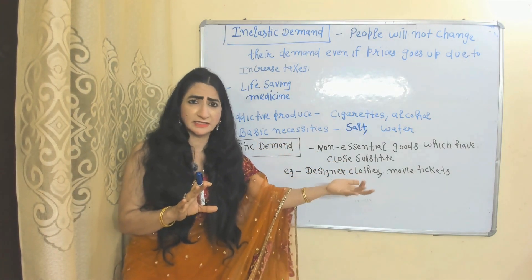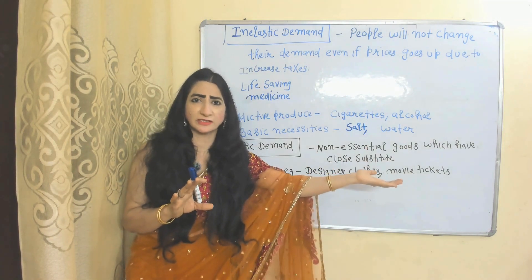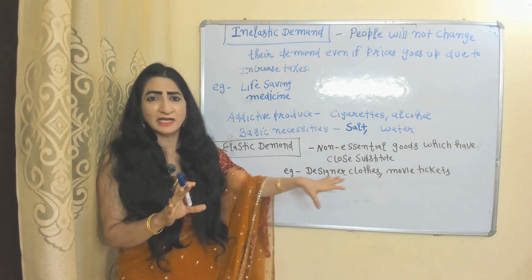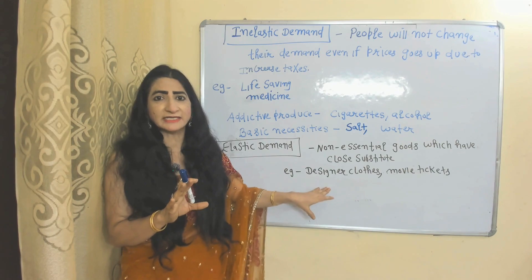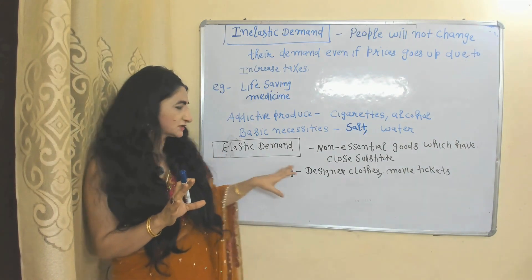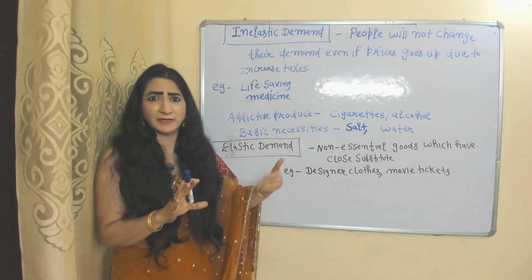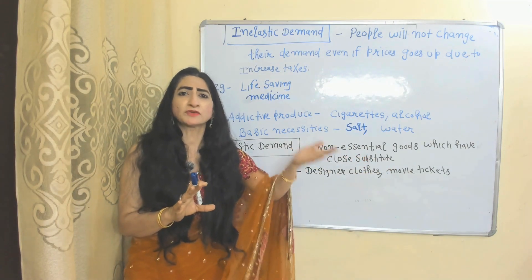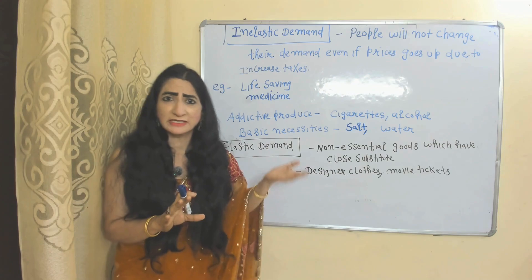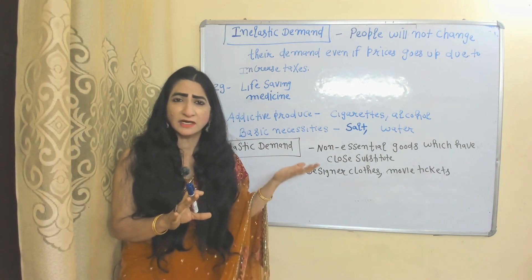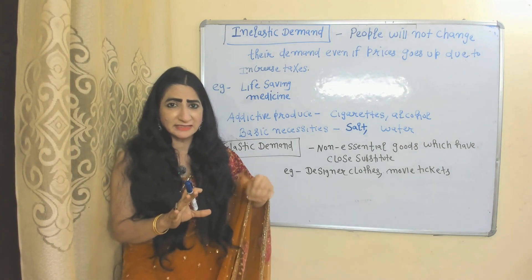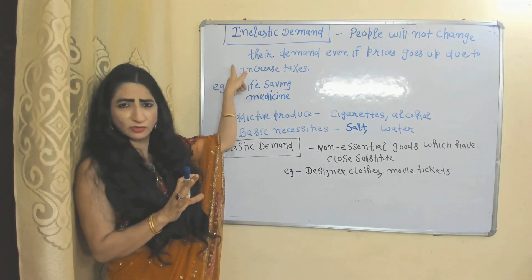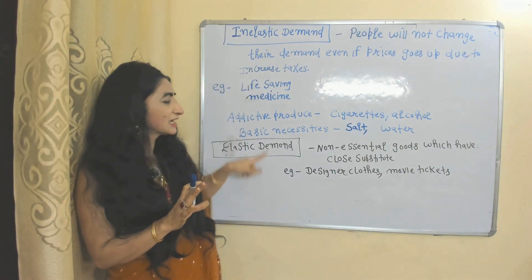On the other hand, elastic demand means the demand for non-essential goods which have many substitutes, and people can easily shift from one option to another. For example, designer clothes or movie tickets. If the government imposes a high tax rate on these goods which demand is elastic, then obviously people will stop buying them or shift to other options. If people stop buying these products, then obviously the tax revenue of the government will reduce.